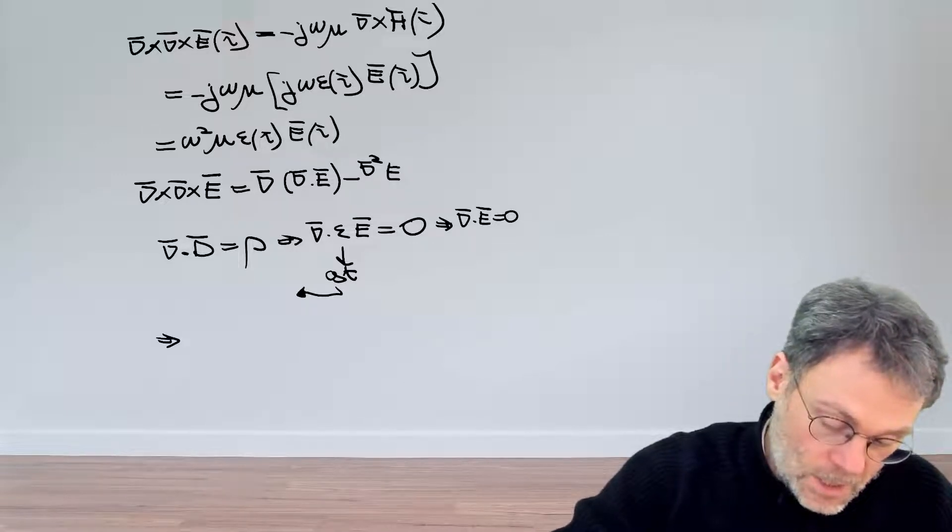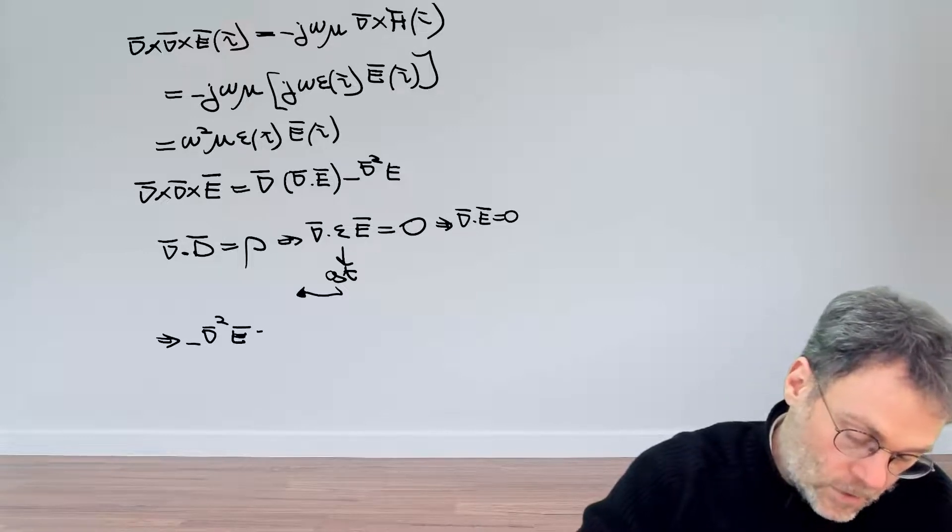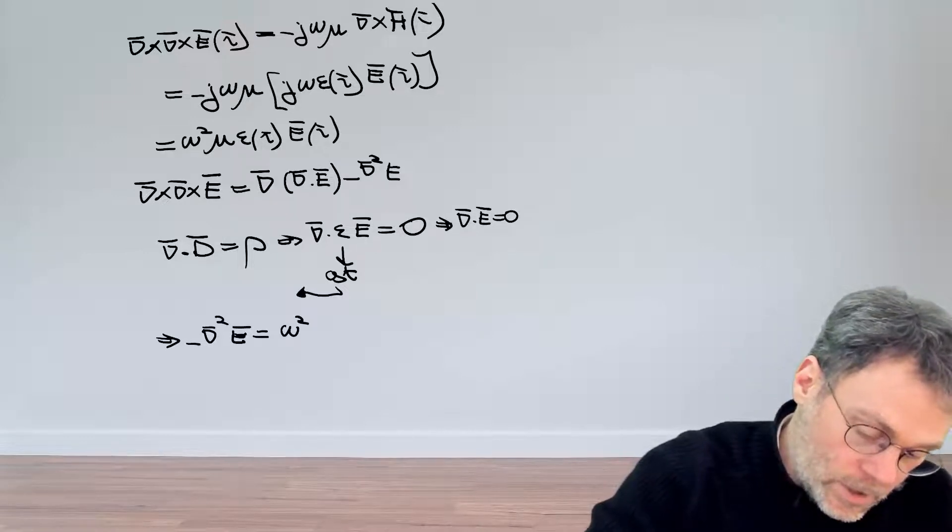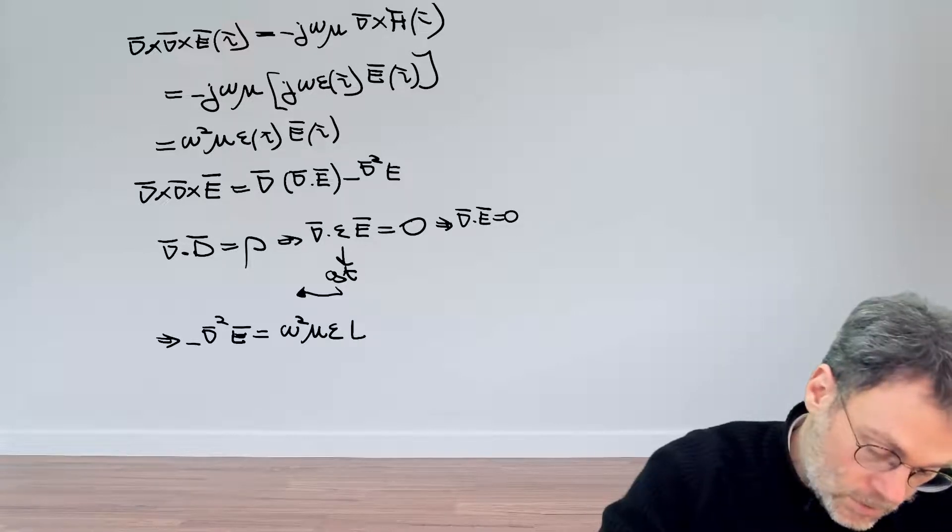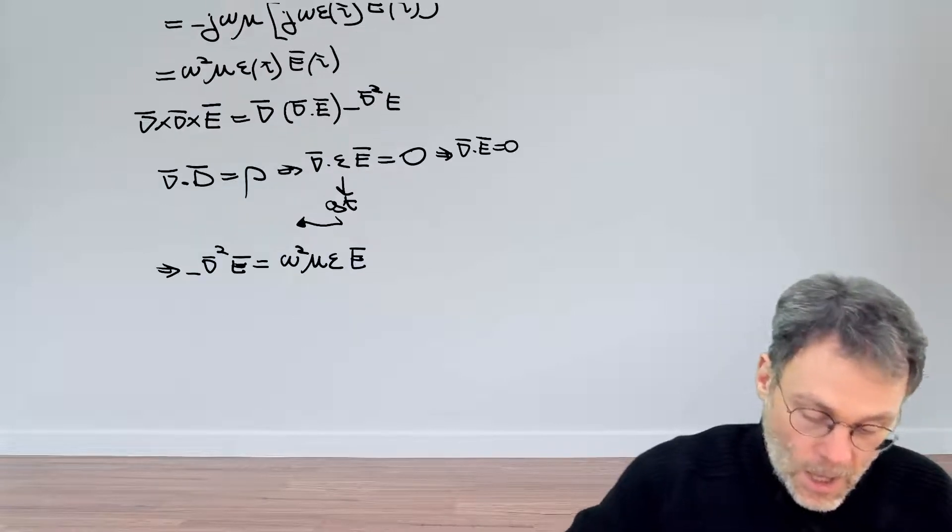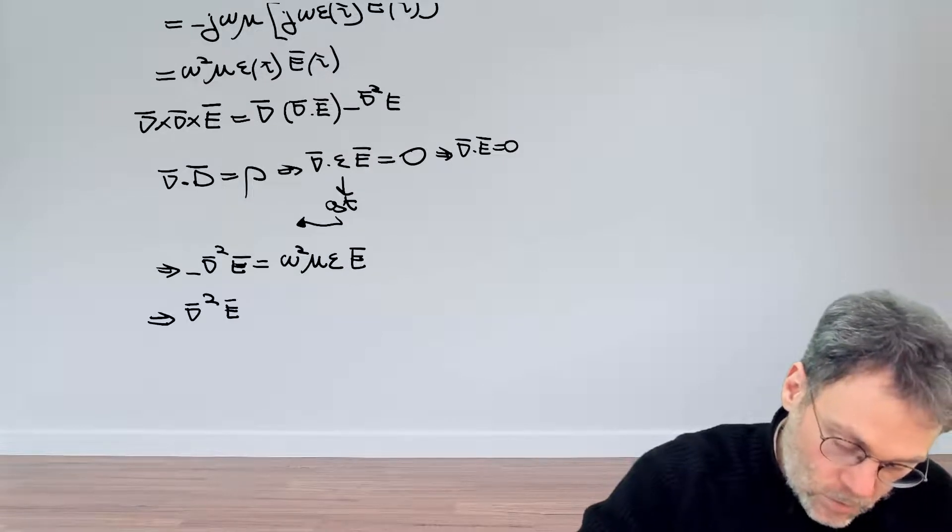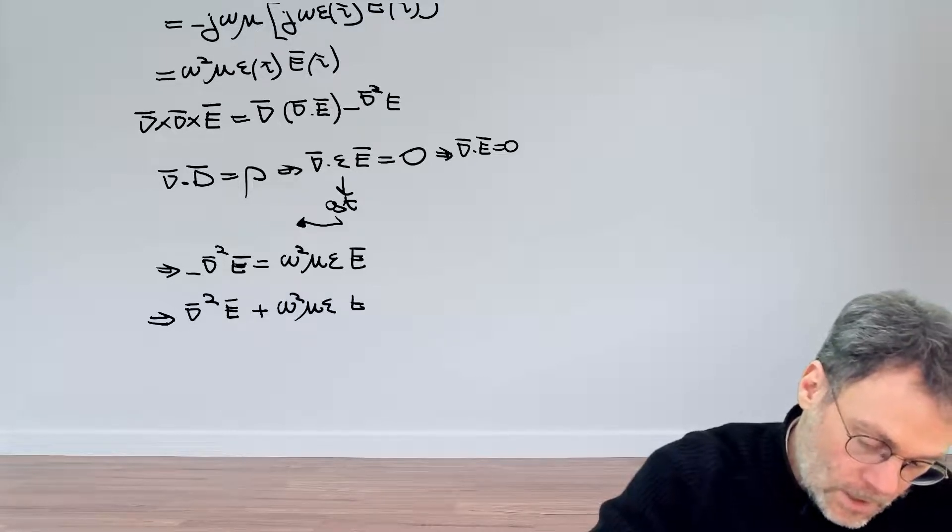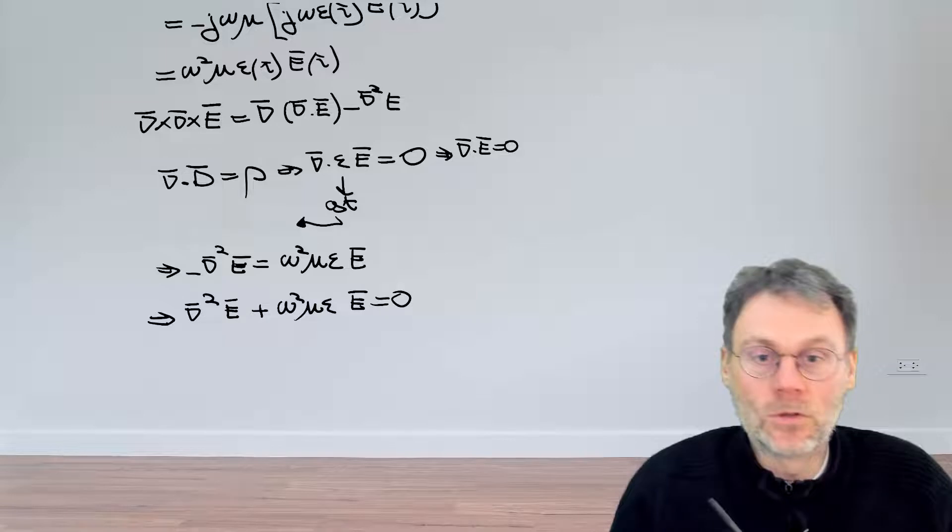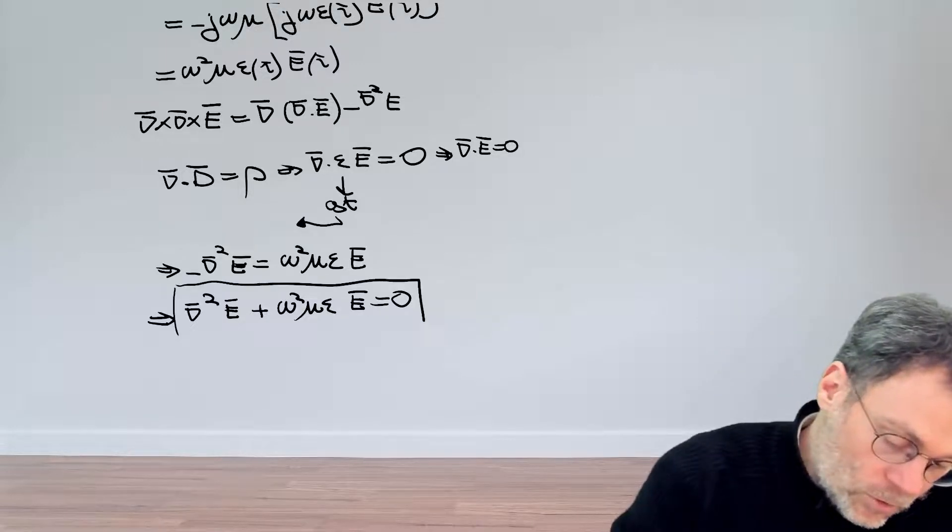So now we can say that we have minus the Laplacian of the electric field is equal to omega squared mu epsilon, which is now a constant in our case, times E. And then, after some very complicated further manipulations, you can write down that the Laplacian of E plus omega squared mu epsilon E is equal to zero. And this is the Helmholtz equation, in this case expressed for the vectorial electric field.